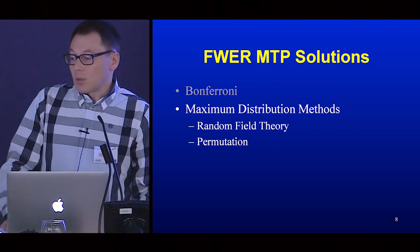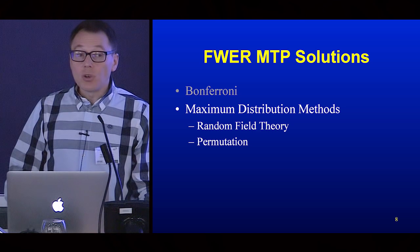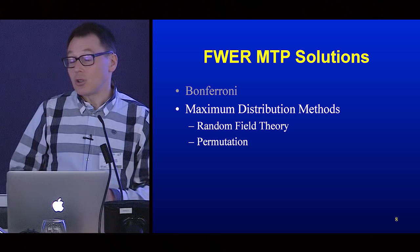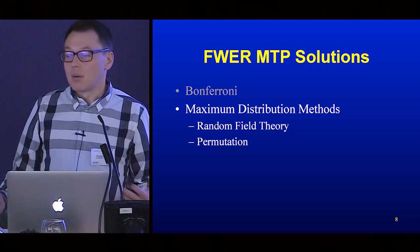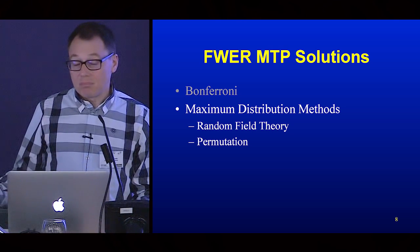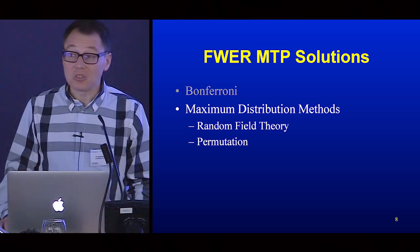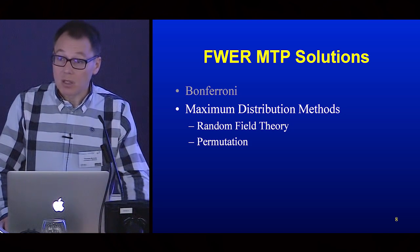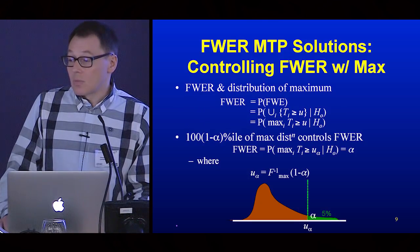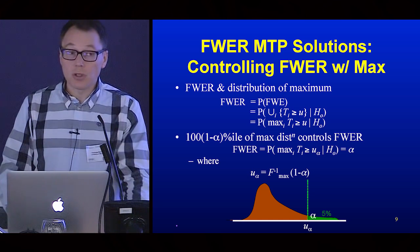To introduce these methods, I'll talk about the link between the maximum distribution and the family-wise error rate. If you've heard of the Bonferroni method — taking the alpha level and dividing it by the number of tests — that's just one of many methods that control the family-wise error rate. There's nothing particularly special about it, except that it always works for any kind of dependence. It can be very conservative, but it's always guaranteed to be valid. The family-wise error rate is the probability of a family-wise error: how can you get a family-wise error when nothing is going on? Only when one or more test statistics are above your chosen threshold.